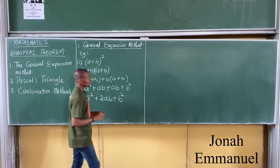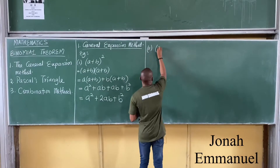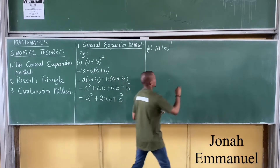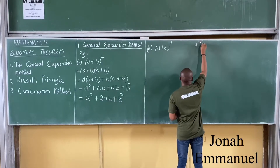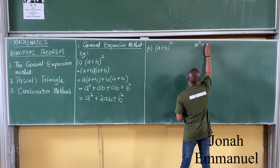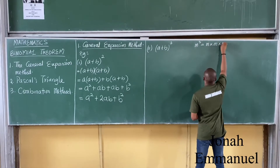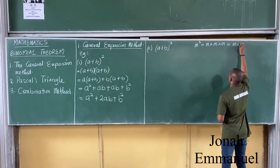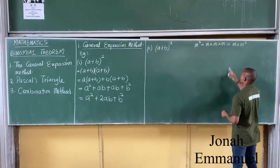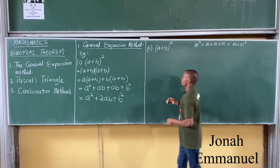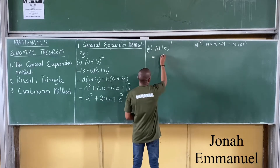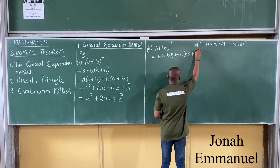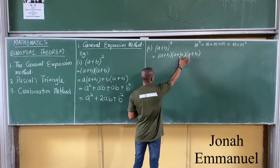Now let's consider (a + b) cubed. We know that m cubed equals m times m times m, which can also be expressed as m times m squared. Using this concept, (a + b) cubed can be expressed as (a + b) multiplied by (a + b) squared.